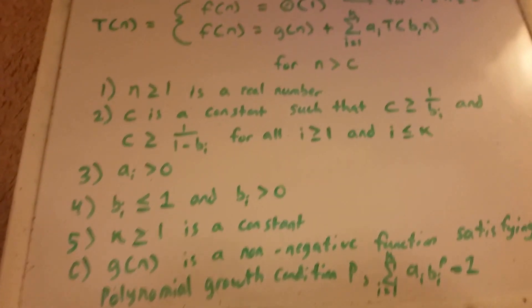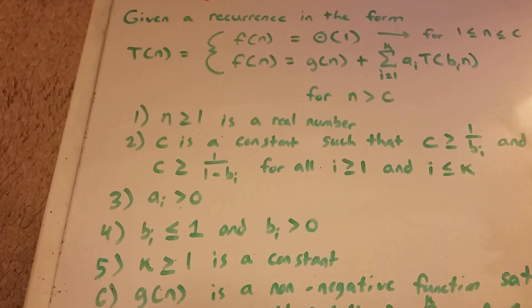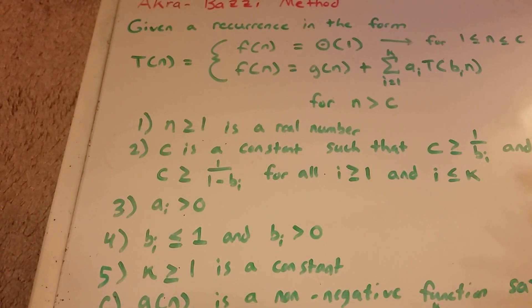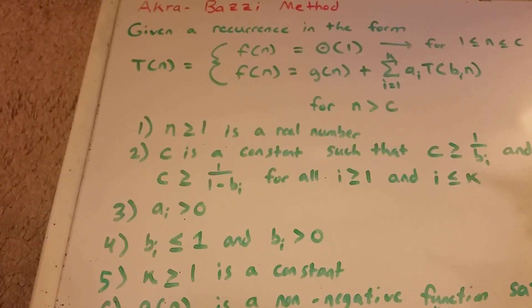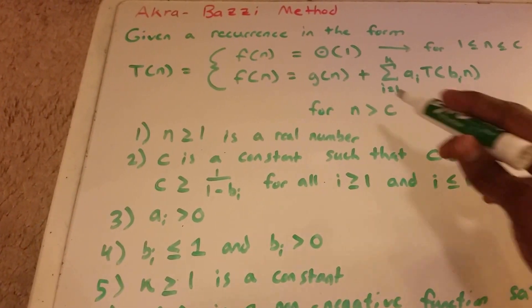So this is a method proposed in 1986 by Akra and Bazzi. It's basically the new master theorem to analyze the asymptotic behavior of mathematical recurrences that appear in the analysis of divide and conquer algorithms. It is the generalization of the well-known master theorem.